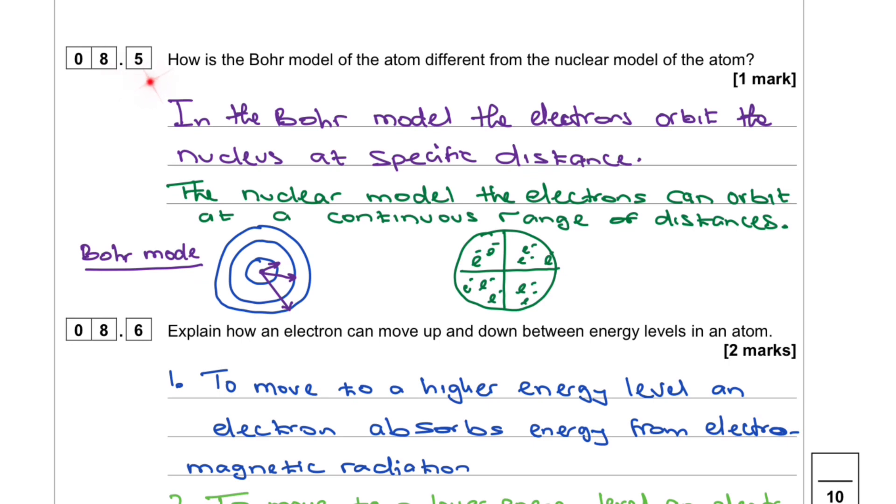8.5. How is the Bohr model of the atom different from the nuclear model of the atom? In the Bohr model, the electrons orbit the nucleus at specific distances.